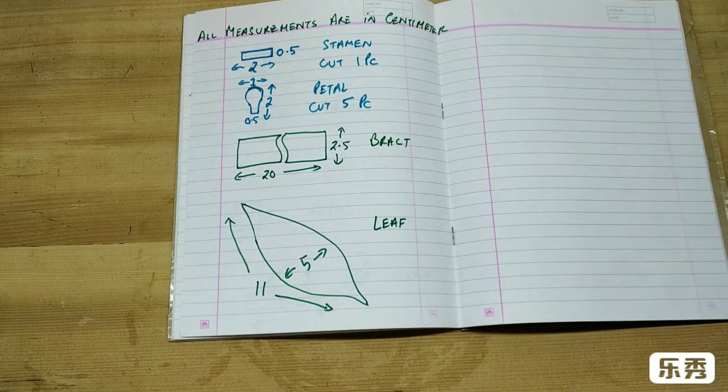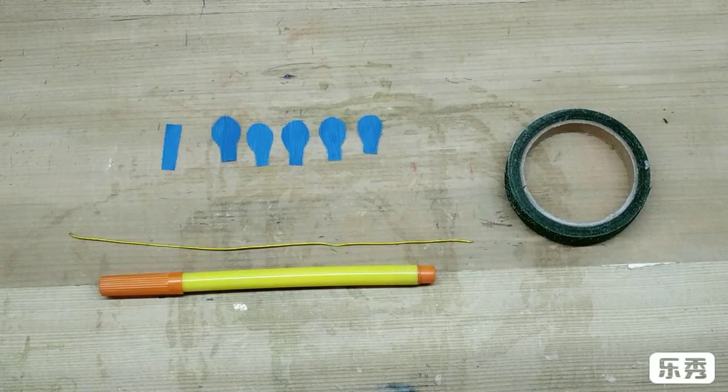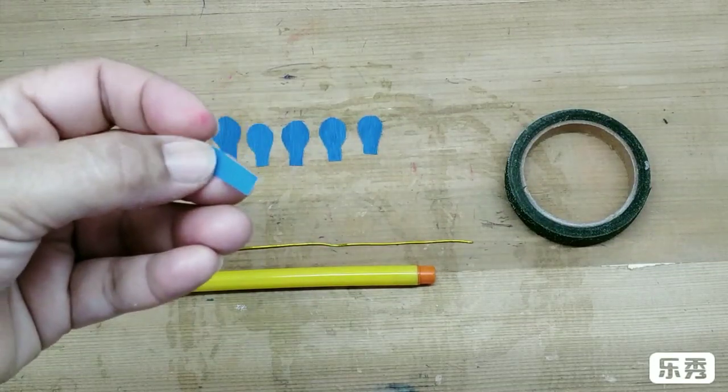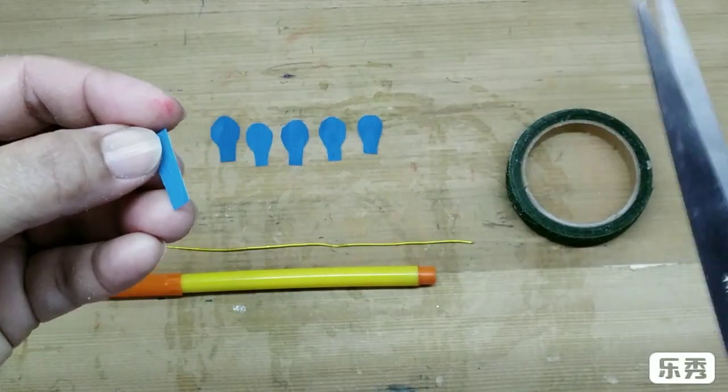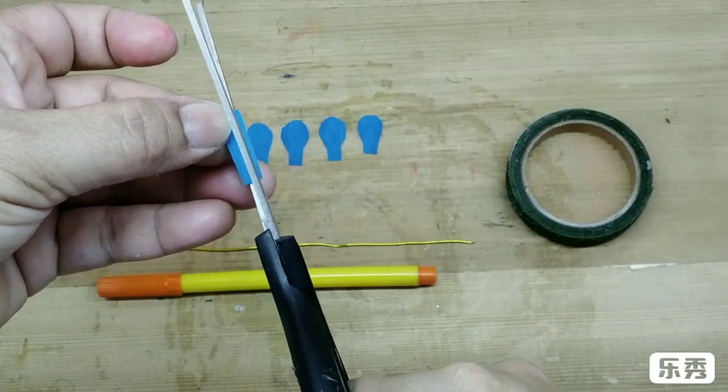Now I take the piece for the stamen and make three cuts, or two cuts on it actually.